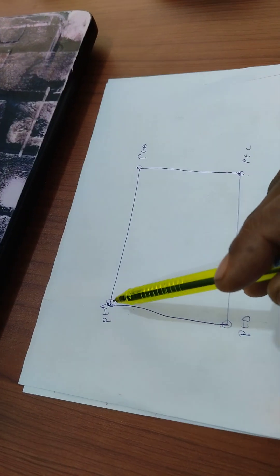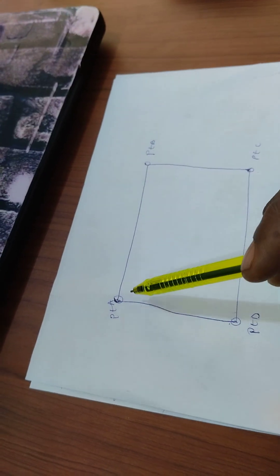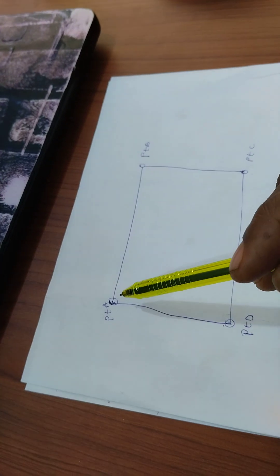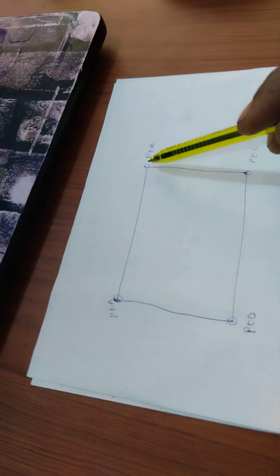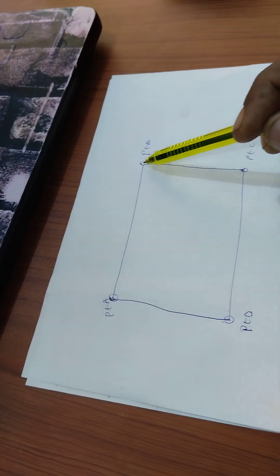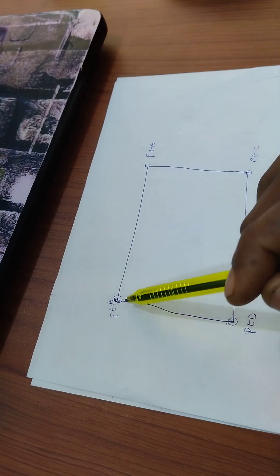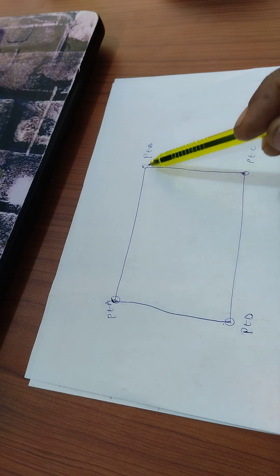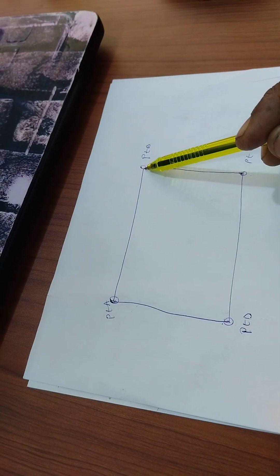One person will stand holding zero mark of the tape on point A. Then the other person, you draw the tape towards B and take the linear measurement from point A to B. You write it down.